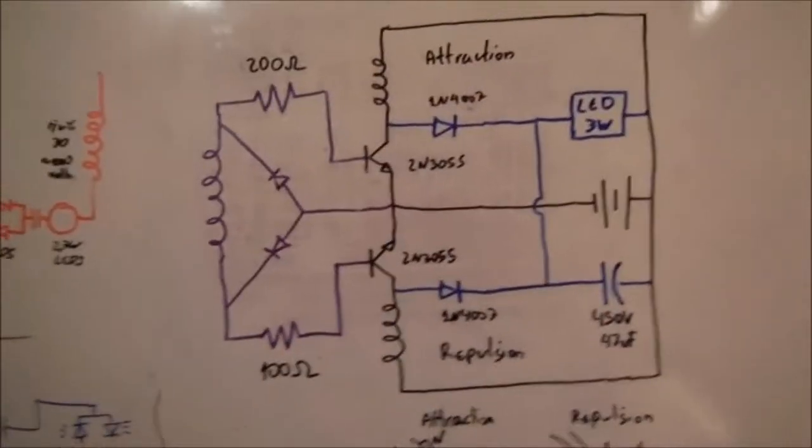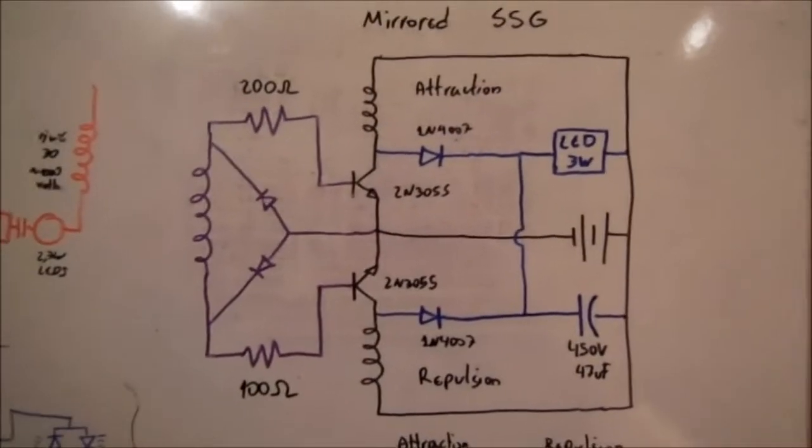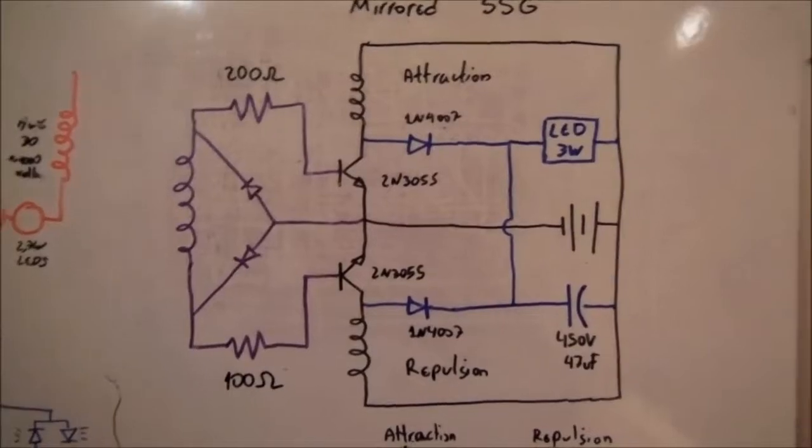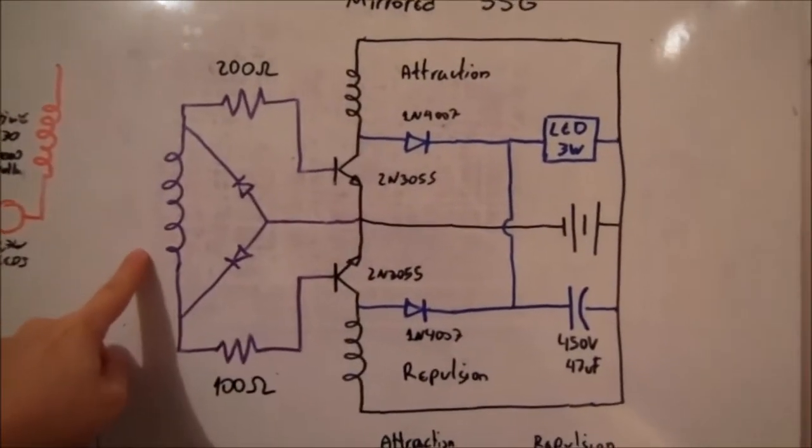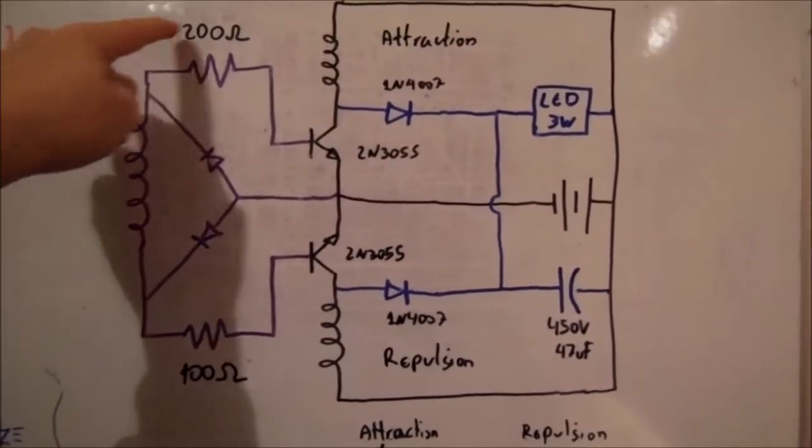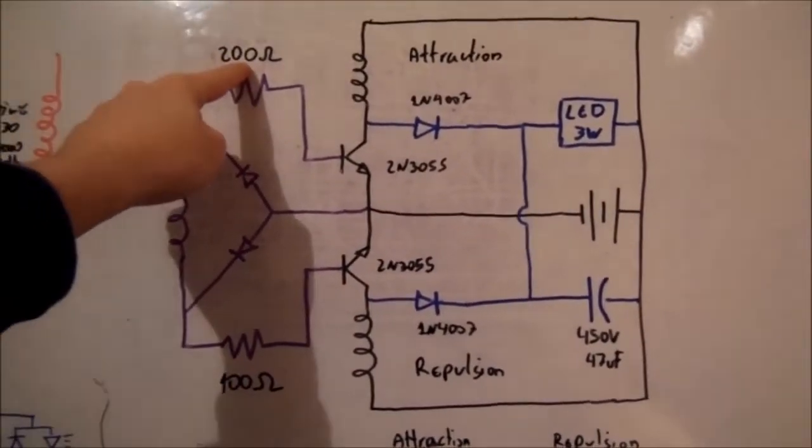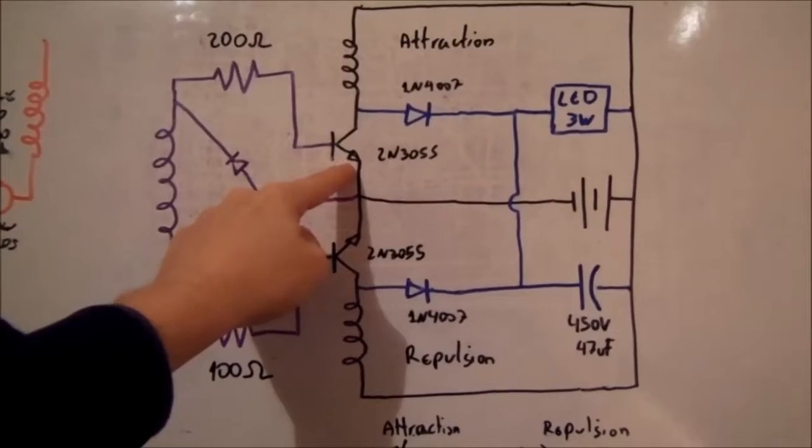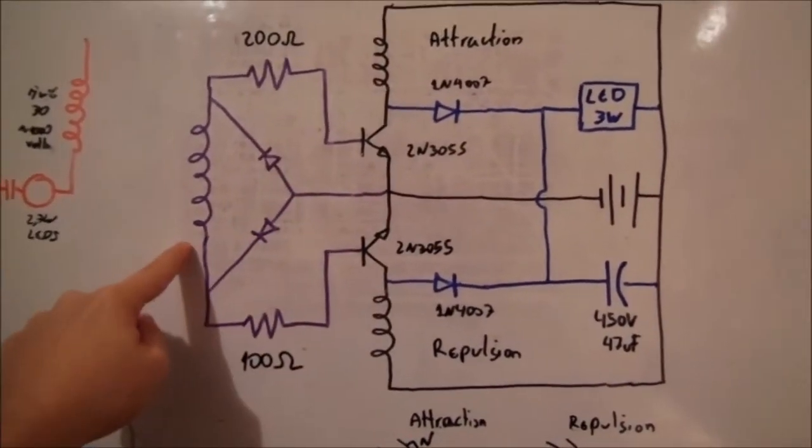This circuit actually uses both attraction and repulsion mode because when the magnet is coming to the coil, the induction is in this direction. So it passes through this 200 ohms resistor, opens the transistor in the upper part and goes back to the trigger coil.